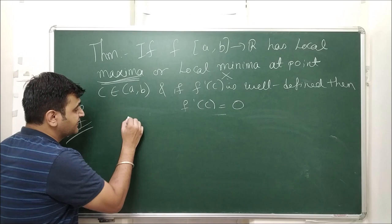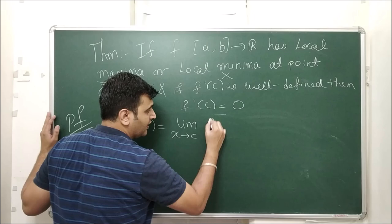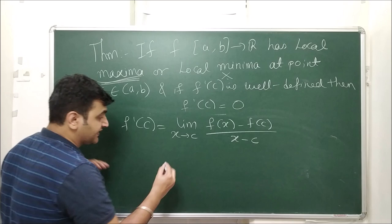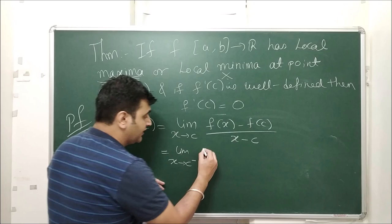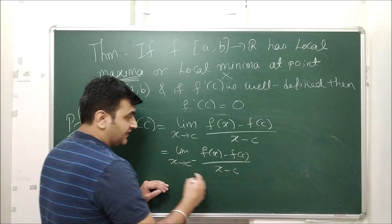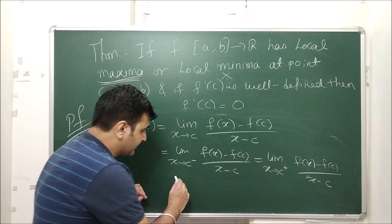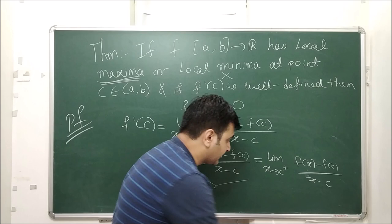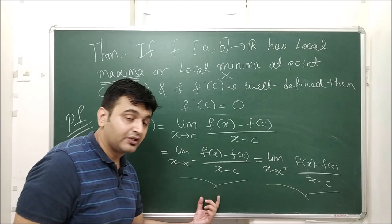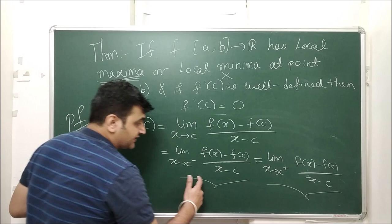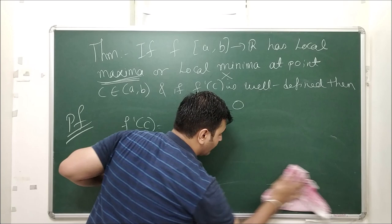We want to prove that f'(c) = 0. Recall the definition: f'(c) = lim(x→c) [f(x) − f(c)] / (x − c). This limit exists when the left-hand limit equals the right-hand limit — that is, the left-hand derivative lim(x→c⁻) [f(x) − f(c)] / (x − c) equals the right-hand derivative lim(x→c⁺) [f(x) − f(c)] / (x − c). We will use each in turn.